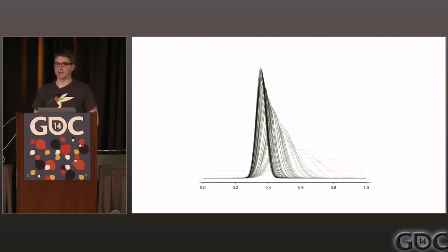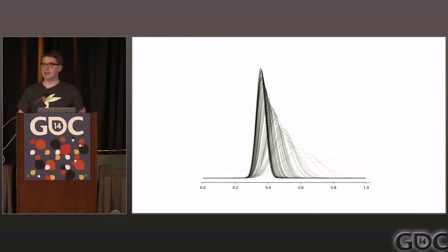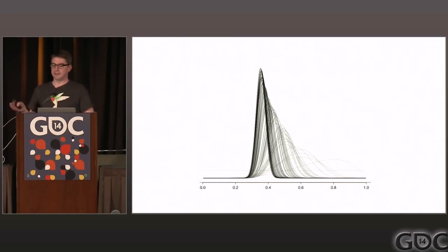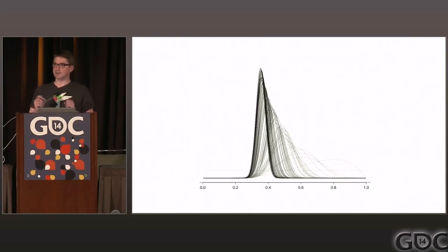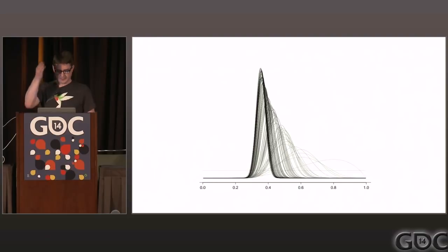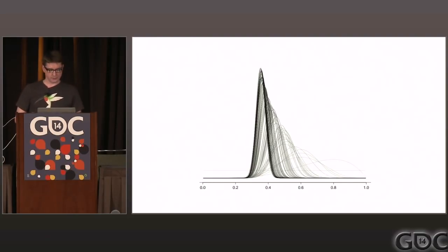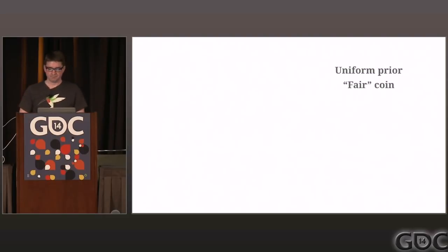This is what it looks like when you run the iteration. All that's really happening is the shape of the beta is changing, representing how confident we now are in the model. At any point we can stop and say: this is what we think our conversion rate is — looking at about 30% with a spread of about 0.1.